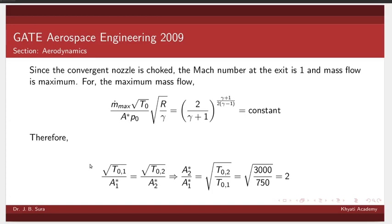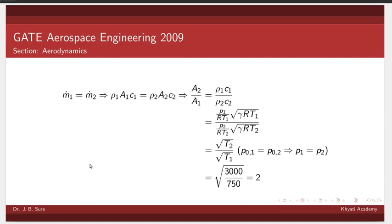We have to increase the area by a factor of 2. Now let's see another simple way. If we can't remember the equation of mass flow parameter, in that case we can go back to the basic continuity equation.